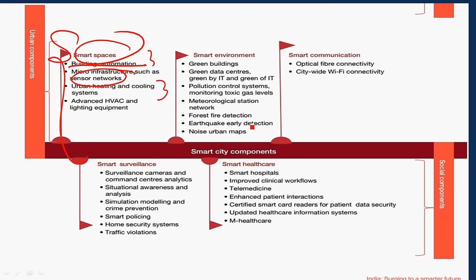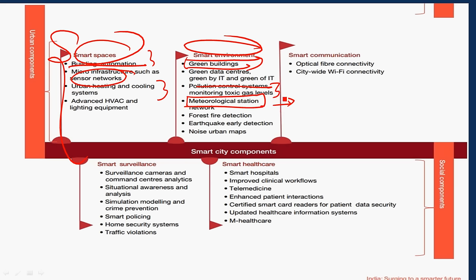Smart environment involves adoption of green buildings which reduce energy consumption and use natural ventilation, green data centers, and pollution control systems monitoring toxic gas levels in cities through real-time monitoring. Meteorological stations provide accurate information related to rainfall, humidity, and other environmental conditions. Other components include forest fire detection on the fringes of cities and earthquake early warning detection systems to alert citizens to move to safer spaces.